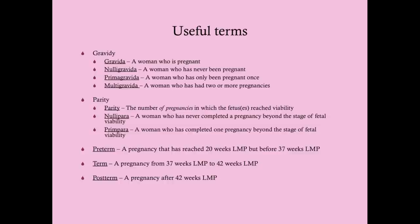Some useful terms: gravidity — spelled with a 'd' — is the state of being pregnant. A nulligravida is a woman who has never been pregnant. A primigravida has only been pregnant once. A multigravida has had two or more pregnancies. Parity refers to how many fetuses she's carried beyond the point of viability, generally assigned at 20 weeks, though increasingly earlier with improving medical technology.